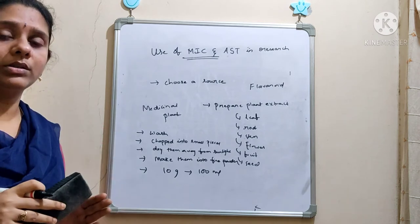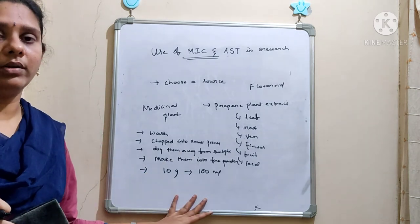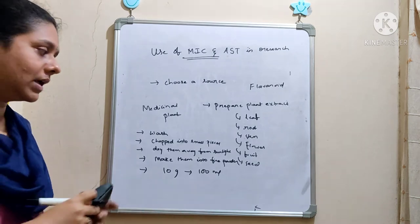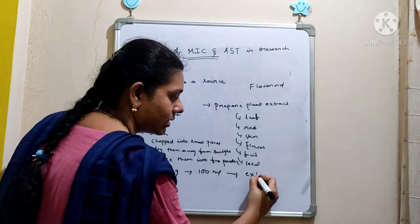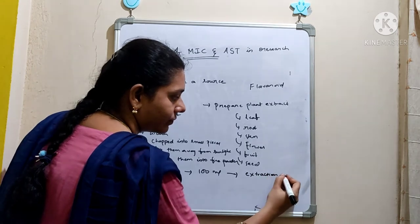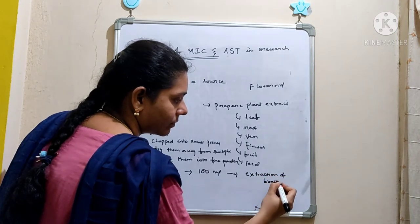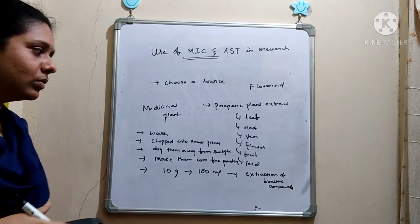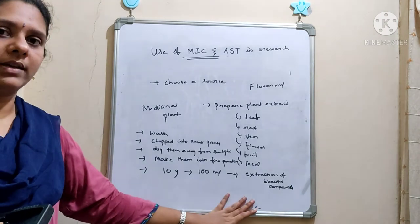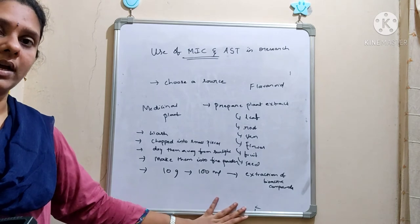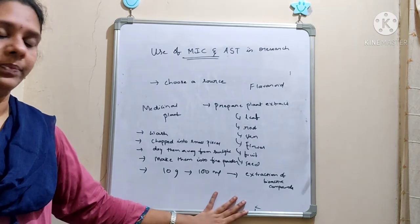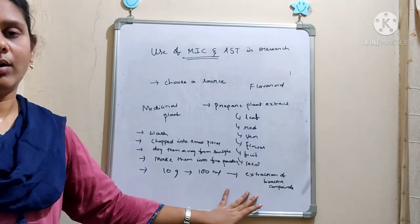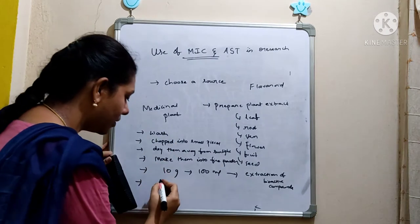Based on the polarity of the solvent, the compounds will be liberated into it. You are adding 10 grams of fine powder into 100 ml of solvent and then allowing extraction of bioactive compounds. You have to follow any suitable extraction method and carry out the process for 24 to 72 hours. During this process, all bioactive compounds will be liberated into the organic solvent. The next step is rota evaporation.